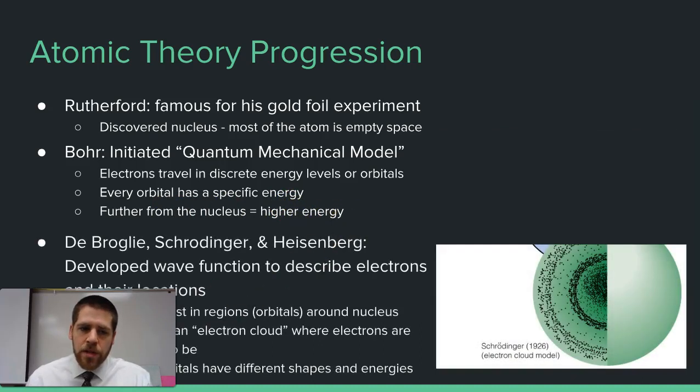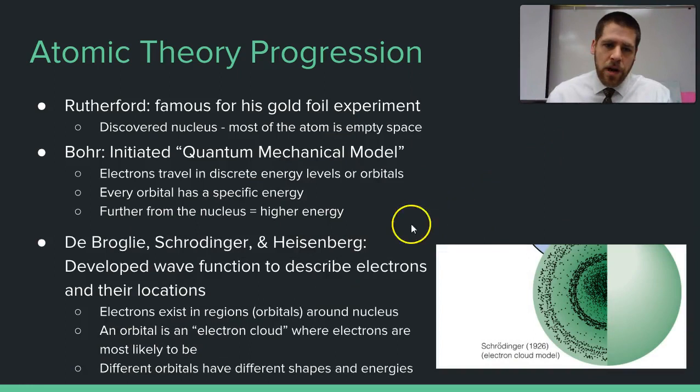About a decade later, de Broglie, Schrodinger, and Heisenberg, over a period of time, contributed bits and pieces to understanding the atom and electrons themselves. They started describing electrons as more like a wave as opposed to a particle. These orbitals weren't really specific orbitals like planets around the sun, but rather regions of space around the nucleus with different shapes and different energies. So it's consistent with Bohr, but goes a little beyond what Bohr said.